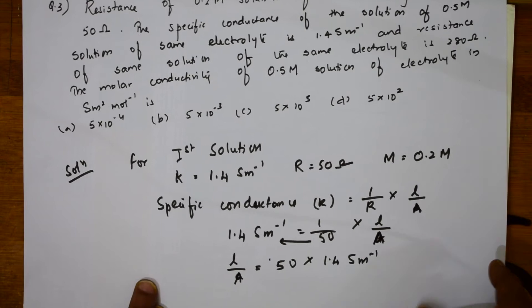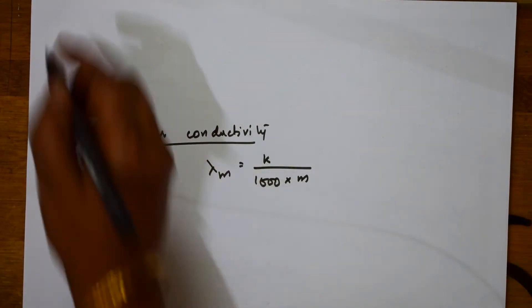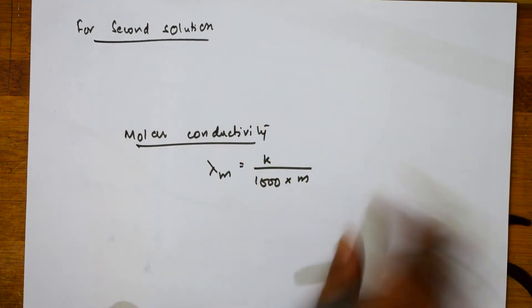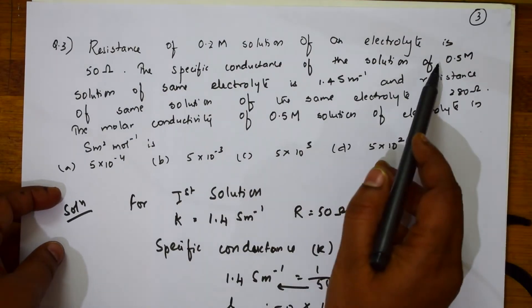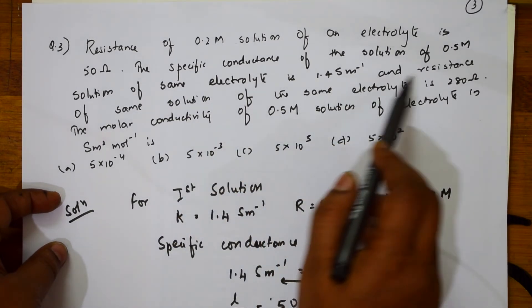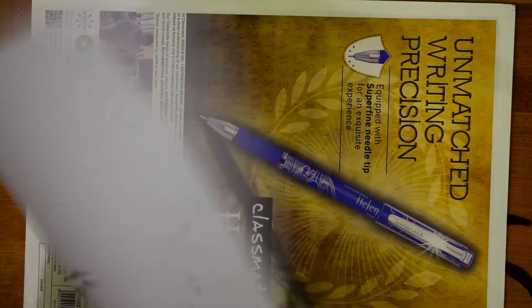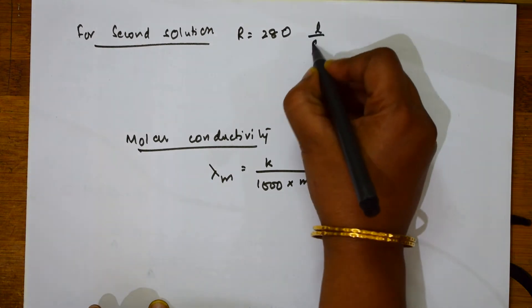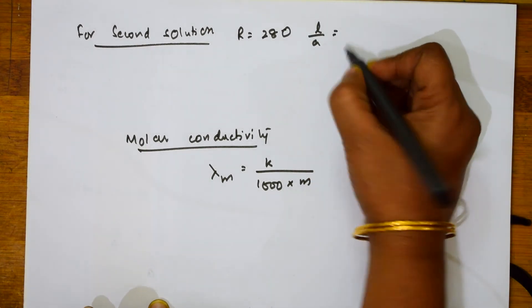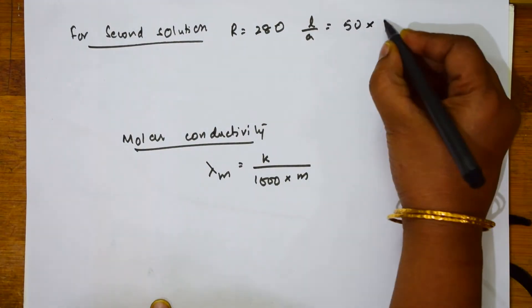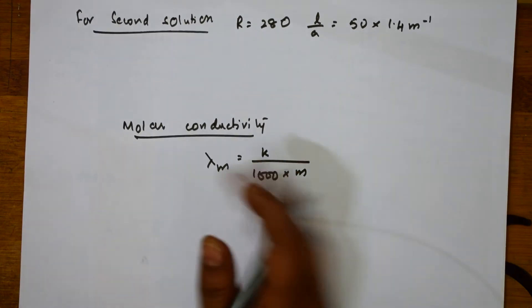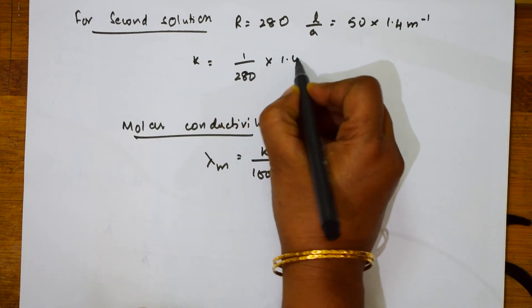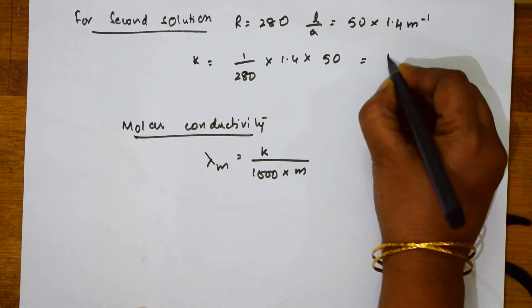Now, for the second solution. Let us try with the second solution. Let me write that for second solution. How much is given to us for the second solution? They said the specific conductance of the solution 0.5 molar, the same electrode 1.4 and the resistance of the same solution and same electrode is 280 ohms. Let me write the data again. R given to me is 280. L by A given to me is already I found in the earlier value, that is 50 times 1.4. So, conductivity is equal to 1 over 280 into 50 times 1.4. When I solve this, I get 1 by 4.